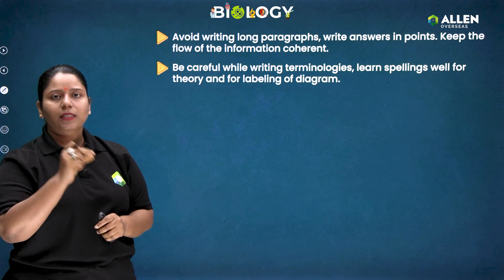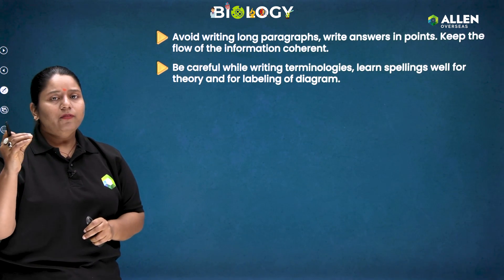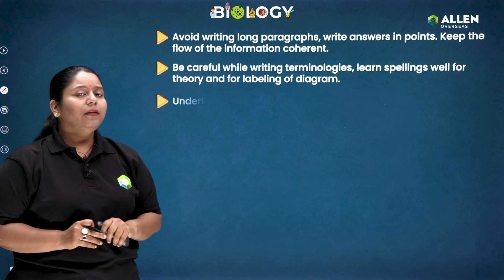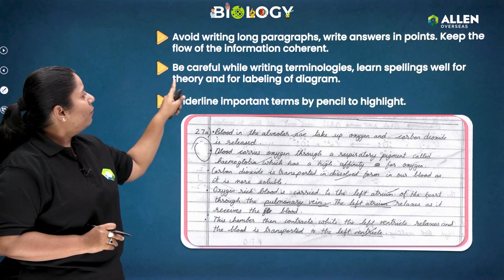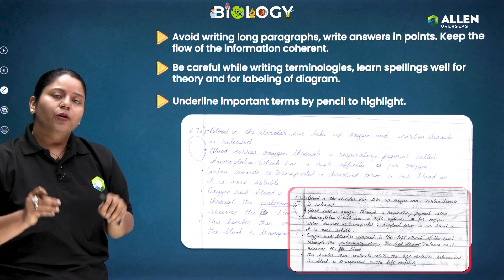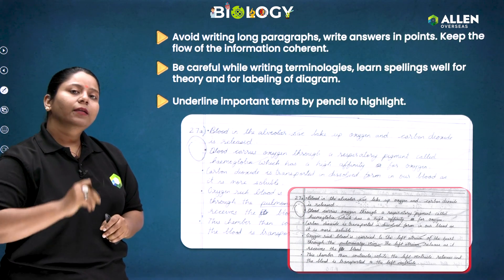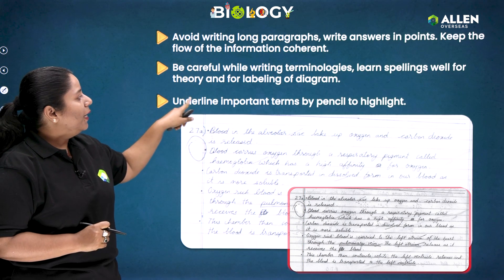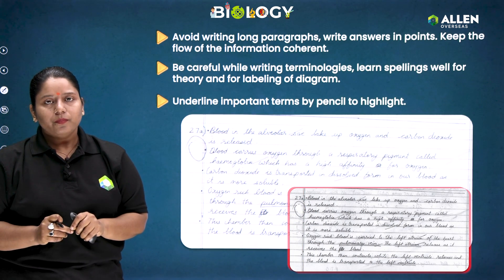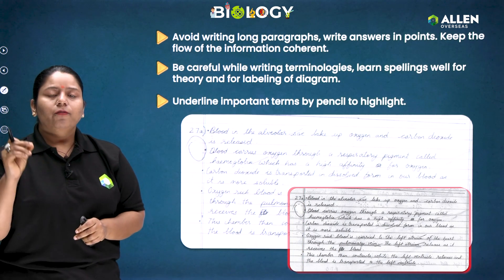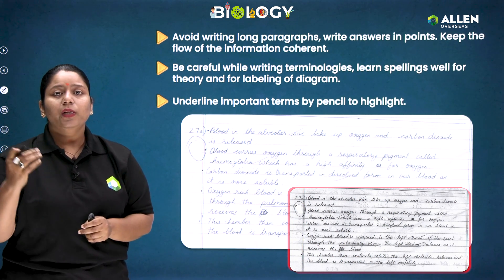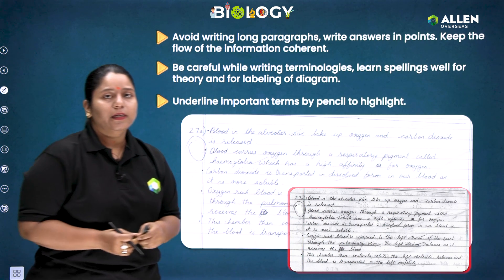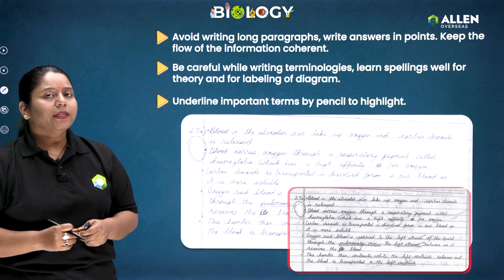Strictly follow the question pattern — if they are asking about photosynthesis, explain only the definition of photosynthesis; if they are not asking for the mechanism, do not attempt it. Be careful while writing terminologies and learn spellings well for both theory and diagram labeling. Underline important terms by pencil to highlight them, and highlight special points separately so they can be easily observed by your examiner.